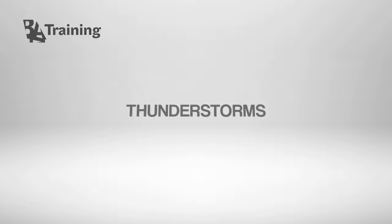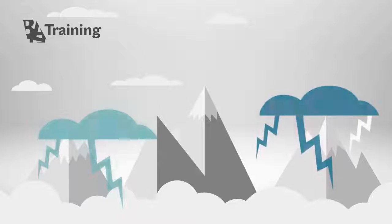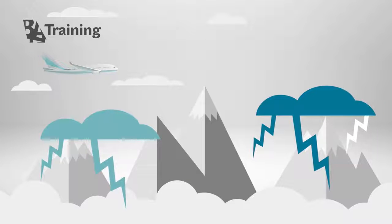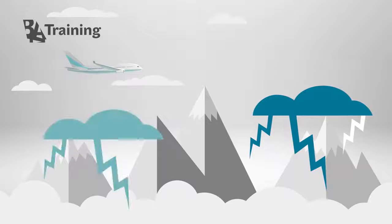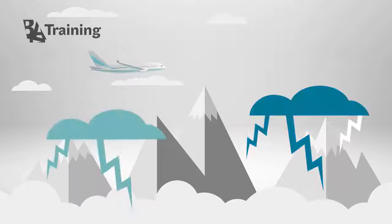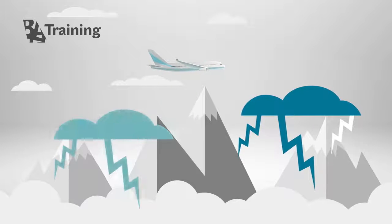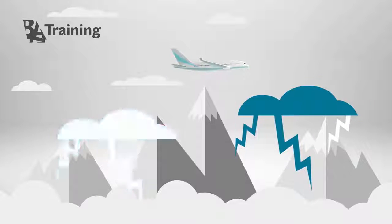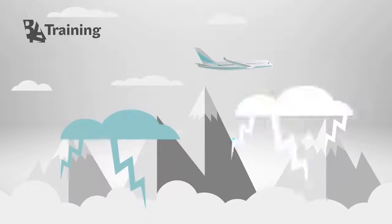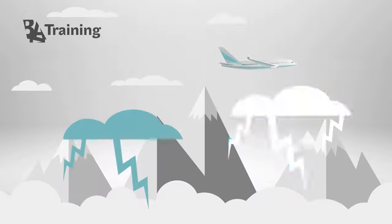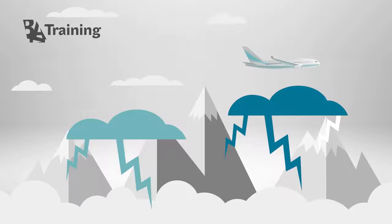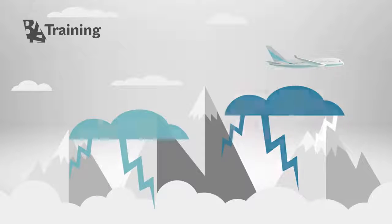Thunderstorms can also create severe turbulence that pilots are taught to avoid. While turbulence can occur inside thunderstorms, it can also occur in the clear air around the storm. This is called convectively induced turbulence. Fortunately, there are many warning systems for pilots. Ground radar, airplane radar and pilot reports will all alert a pilot to thunderstorms.